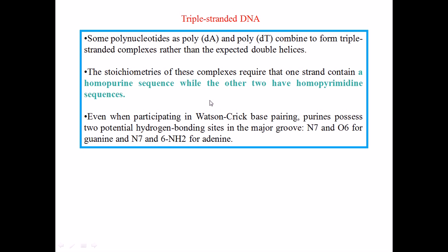Let's talk about triple-stranded DNA. It was once thought to not be possible. At the beginning of DNA structure discovery, Linus Pauling gave a model of triplex DNA which was incorrect — he placed the nitrogenous bases on the outside and the phosphate groups on the inside, which was wrong. We now know that triple-stranded DNA can be formed with bases on the inside and the backbone on the outside.